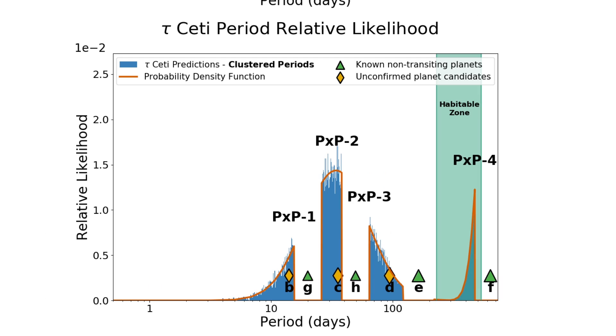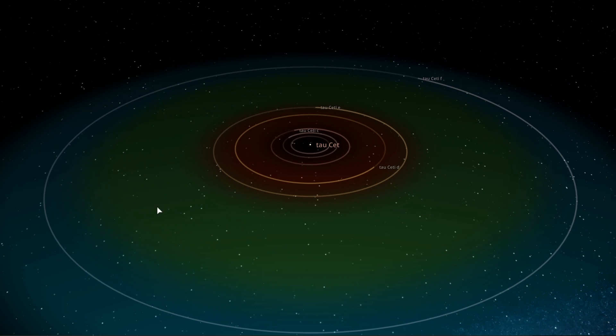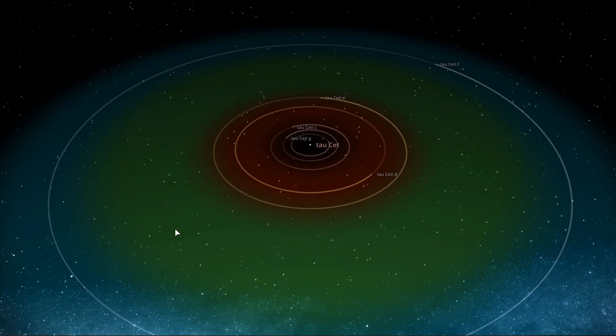And so using the DYNAMITE algorithm, the scientists behind the paper in the description, were able to find out the most likely locations of four other objects that are most likely present here. And one of these objects seems to be right in the middle of the habitable zone, at a distance of about 0.7 astronomical units away from the center of the star. So basically somewhere right here.